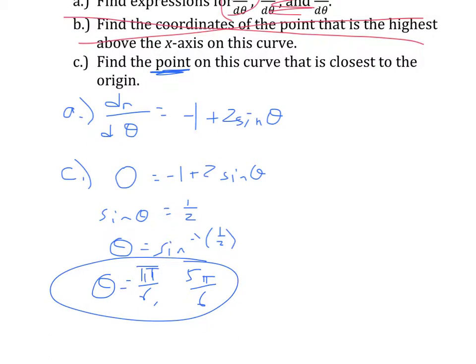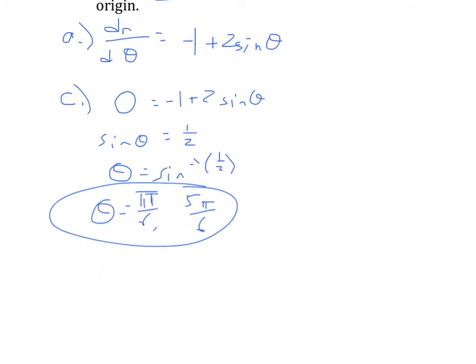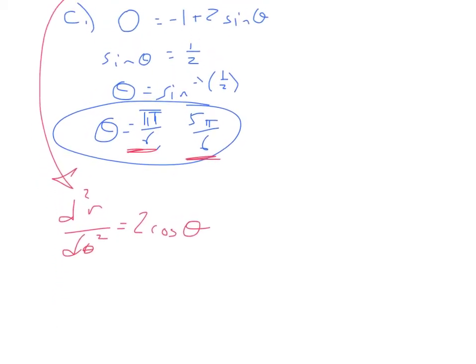What I'm going to do instead is use the second derivative test. The second derivative test says if the second derivative is positive at one of these values, it means the function is concave up, which means you're working with a minimum. If it's negative, it means it's concave down, and you're working with a maximum. So I need to look at the second derivative here. I'm going to take my first derivative and take the derivative of that. d²r/dθ² will be 2cos(θ). So what I can do now is compute that for each one of these two potential maxes and mins.